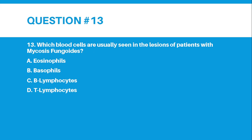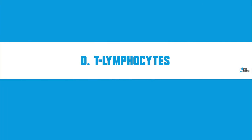Number 13: Which blood cells are usually seen in the lesions of patients with mycosis fungoides? Letter A, Eosinophils. Letter B, Basophils. Letter C, B-Lymphocytes. Letter D, T-Lymphocytes. The correct answer for number 13 is Letter D, T-Lymphocytes.